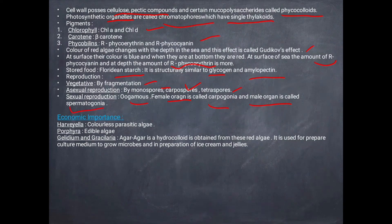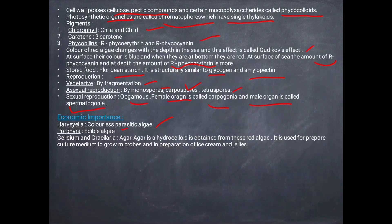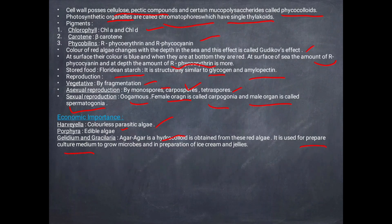Sexual reproduction in red algae is oogamous. The female organ is carpogonia and the male organ is spermatogonia. Economic importance: Porphyra is an edible alga. Gracilaria and Gelidium yield hydrocolloid agar, used for the preparation of cultural media to grow microbes and in the preparation of ice creams and jellies.